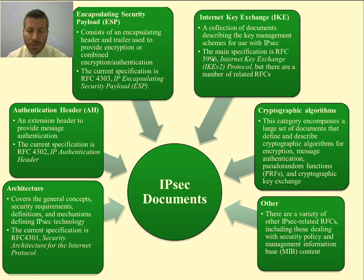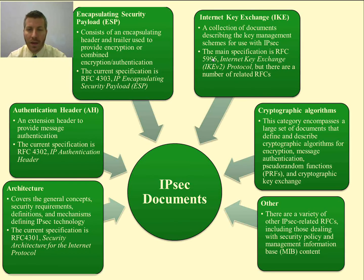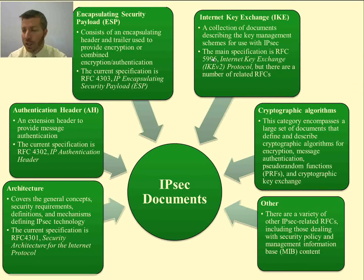Moving up, RFC 4302 is the authentication header — an extension header to provide message authentication. At the top, encapsulating security payload consists of an encapsulating header and trailer used to provide encryption, or combined encryption and authentication. The distinction between encryption and authentication is comparing who is able to read the data versus making sure the data came from the person we believe it should.